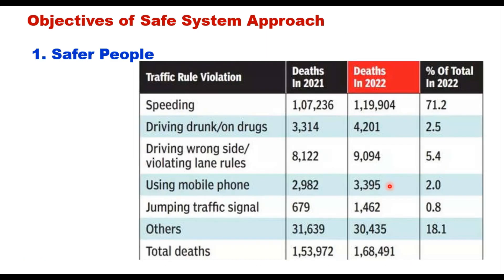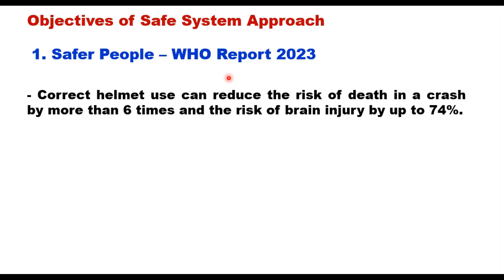Similar data is available for Indian conditions. In India, speeding is considered the major factor in road deaths — almost 71 percent of road deaths are due to vehicle speeding. Other important factors include drunk driving, driving on the wrong side, use of mobile phones, and jumping traffic lights, all of which must be considered when designing a safe system approach.